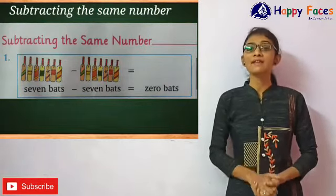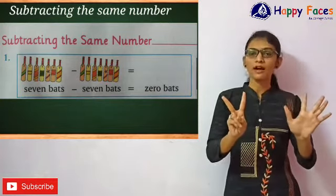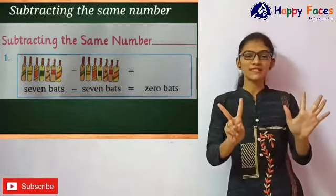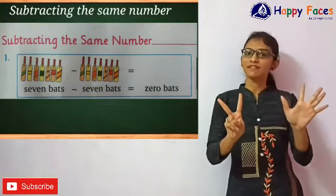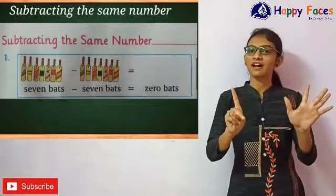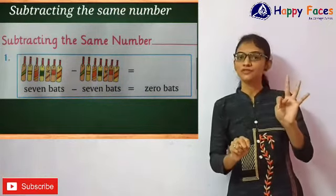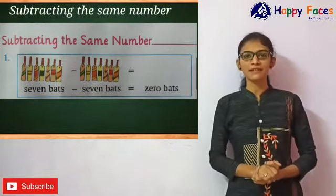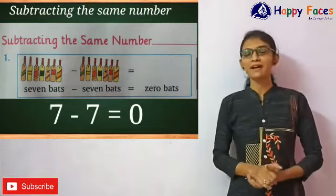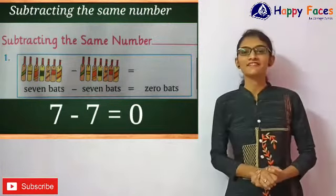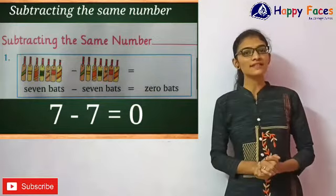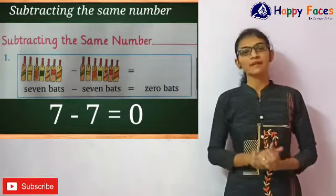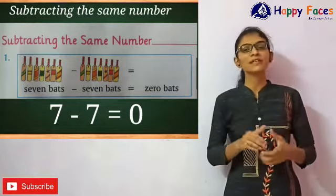Agar aapke paas 7 bats hai, aur aapne usme ke 7 bats minus ki hai. So first take out your 7 fingers. Abhi 7 fingers remove karo. So 1, 2, 3, 4, 5, 6, 7. Aapke paas kuch bats bacha bhi? No. So 7 minus 7 equals 0, and 0 is the answer. Kyunki ham ne 7 bats me se poore 7 bats remove kar diye. So aapke paas kuch bhi nahi bacha.